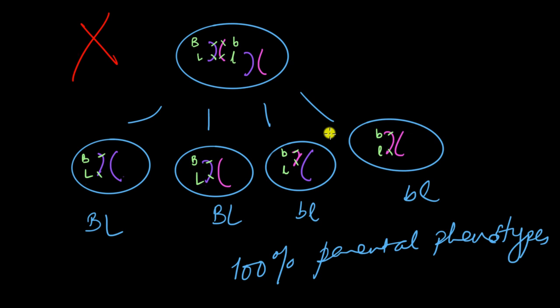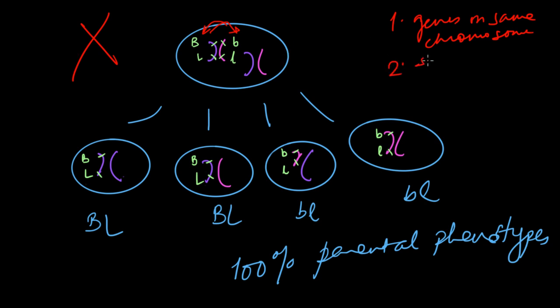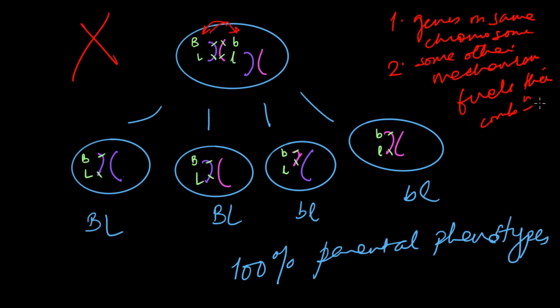Morgan did get some hybrids, so this alone can't explain it. The genes might be on the same chromosome, but something else is involved. What if we could exchange genes between chromosomes — swap a b from one chromosome to another? That would create newer combinations. We can be sure of at least two things: one, the genes are definitely on the same chromosome, and two, some other mechanism fuels their combination into hybrids. We'll look into exactly what that mechanism is in another video.